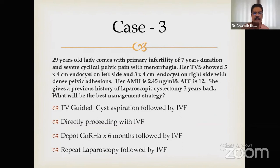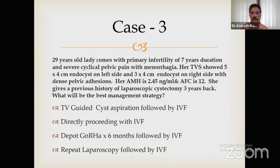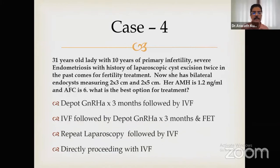Case 3: A 29-year-old woman with seven years of severe cyclical pain and menorrhagia. Ultrasound showed left endometrioma 5x4.7 cm and right endometrioma 3x4 cm. AMH was 2.4 — borderline acceptable. Previous laparoscopic cystectomy had been done. A repeat laparoscopy was avoided, and the patient was given depot medroxyprogesterone. After six months, IVF was performed. Looking back, directly proceeding to IVF — or trying three cycles of controlled ovarian stimulation first — would have been the correct management.